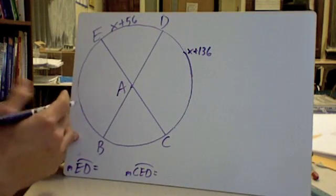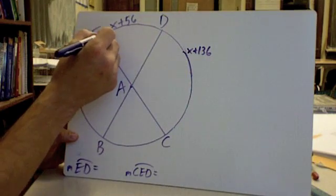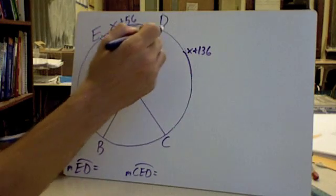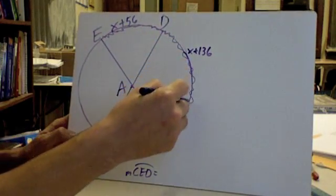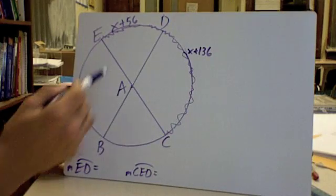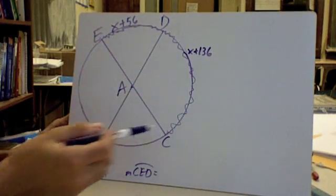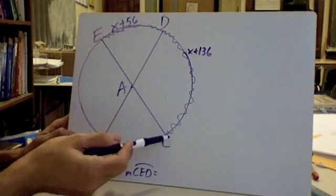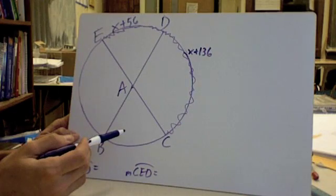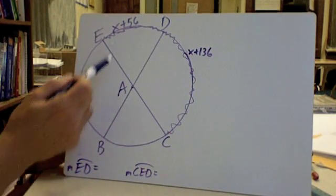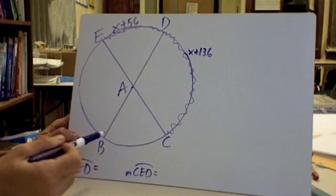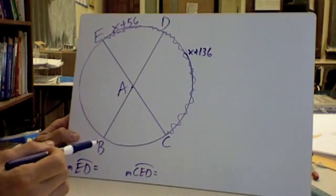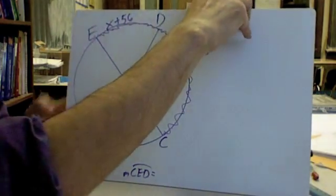So we need to look at what we have here. For ED, like I said earlier, I gave you this arc X plus 56. For DC, I gave you this arc X plus 136. And if we trace that, we see that we have a semicircle. So I know that the arc measure for this should be 180 degrees. So what I'm going to do, since I know these add up to 180, they're supplementary, I'm going to say X plus 56 plus X plus 136 equals 180, and we're going to solve that equation.